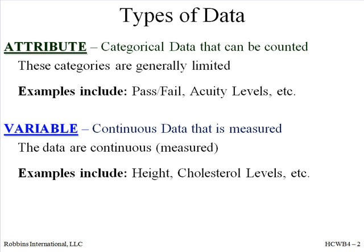Those are five distinct categories. The other data type is variables, referred to as continuous data, as the possibilities of this measurable data can be infinite. Height and cholesterol levels are two types of variables data. Let's take a short quiz to get a better understanding of this important difference.